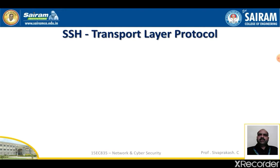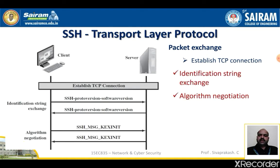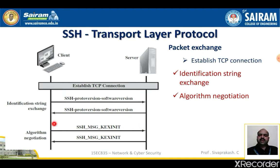Let's see this packet formation in detail — establishing a connection. The identification string exchange and algorithm negotiation happen here. When a client and server begin establishing a TCP connection, they exchange identification strings. The client sends SSH protocol version and software version to the server; meanwhile, the server provides the same SSH protocol version and software version to the client, allowing both to identify each other. Then they proceed to algorithm negotiation, sending messages between client and server.